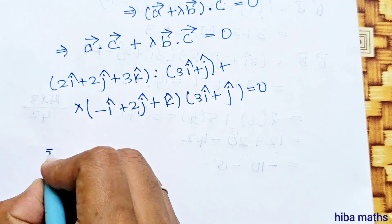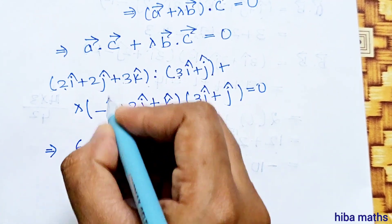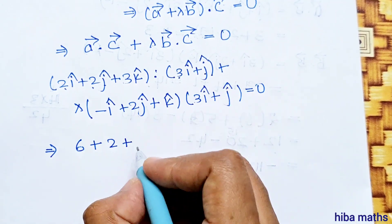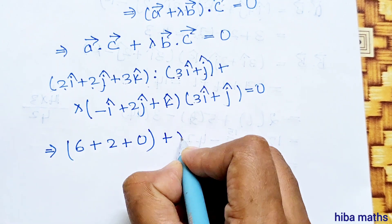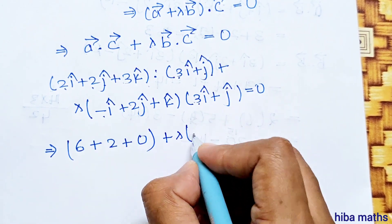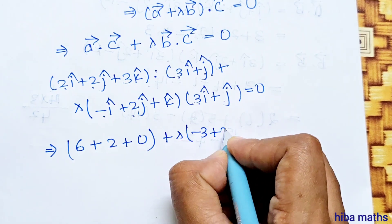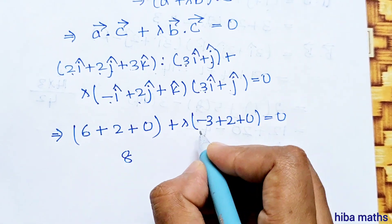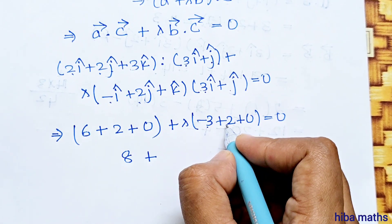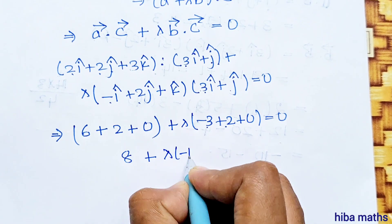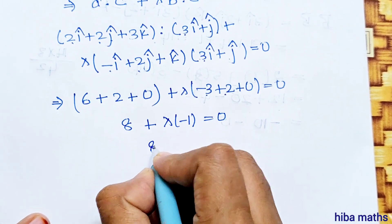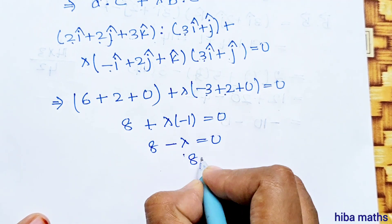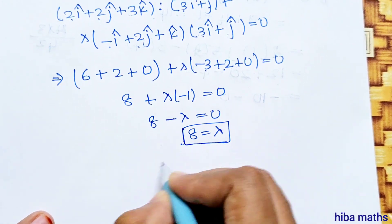Expanding: 2 times 3 equals 6, plus j component 2 times 1 equals 2, k value is 0. Plus lambda times: minus 1 times 3 equals minus 3, plus 2 times 1 equals 2, k value is 0. So 6 plus 2 plus lambda times (minus 3 plus 2) equals 0, giving 8 plus lambda times (minus 1) equals 0, so minus lambda plus 8 equals 0, therefore lambda is equal to 8.